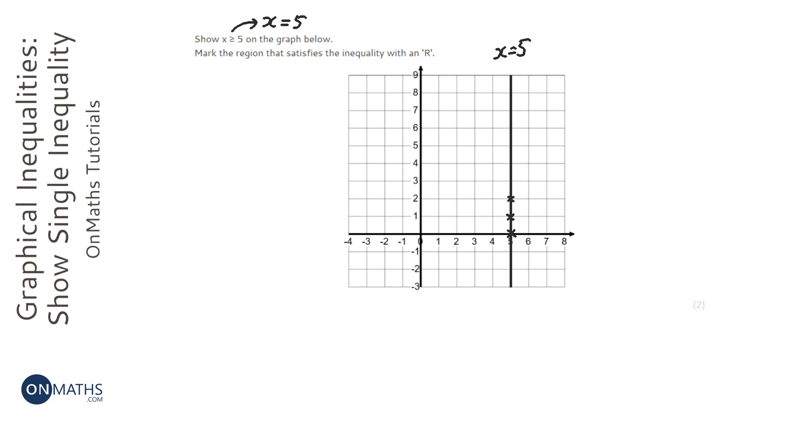That's the line x equals 5, but it asks us to mark the region in the inequality with an R. So it's either going to be to the left or the right of this line.